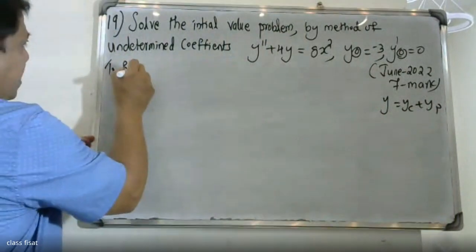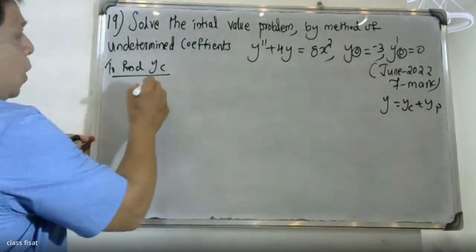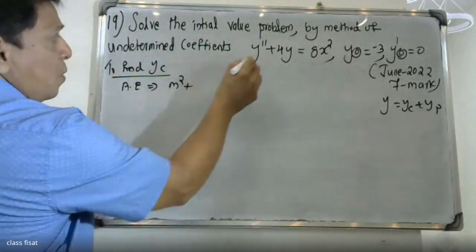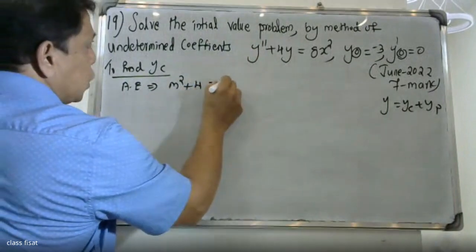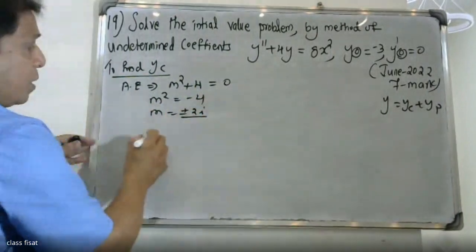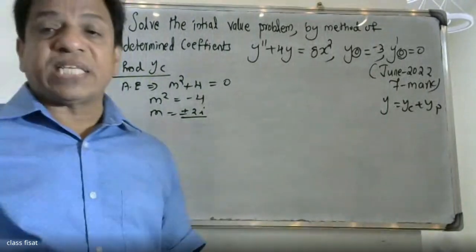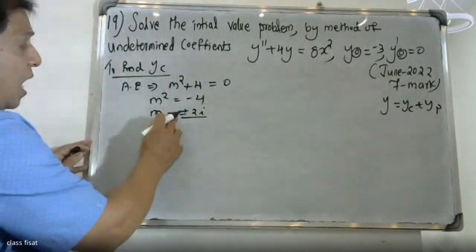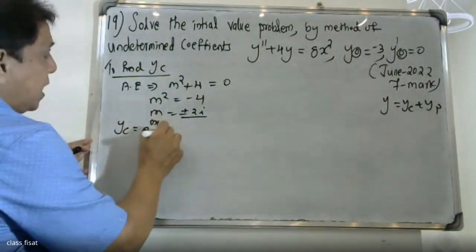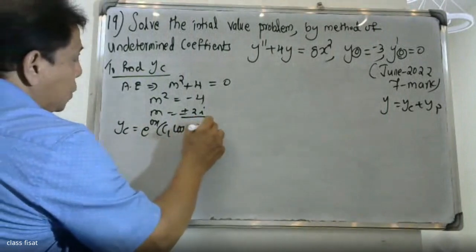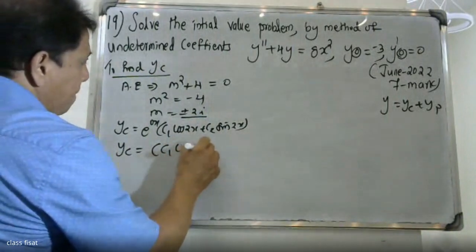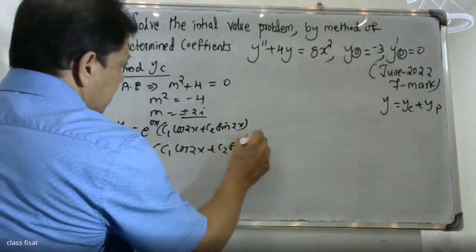To find yc: the characteristic equation gives r² + 4 = 0, so r = ±2i. The roots are in the form alpha ± i·beta, where alpha = 0 and beta = 2. Therefore, yc = c1·cos2x + c2·sin2x.